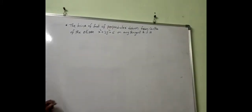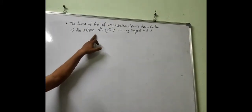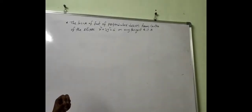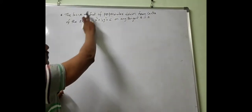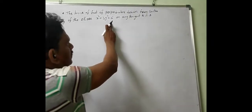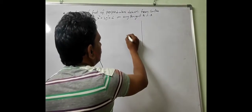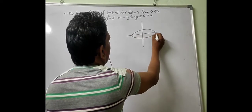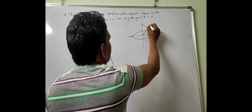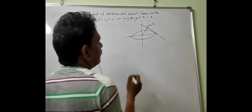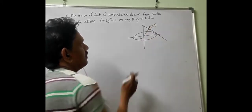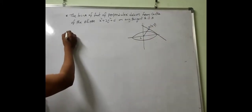The problem asks to find the locus of the foot of perpendicular drawn from the center of the ellipse x² + 3y² = 6 on any tangent to it. Suppose this is the ellipse, and if you take any tangent to it, from the center we draw a perpendicular. Suppose P(x, y) is the foot of perpendicular from the center on this tangent. We have to find the locus of (x, y).